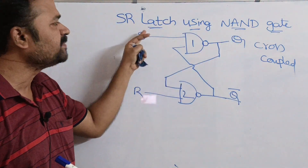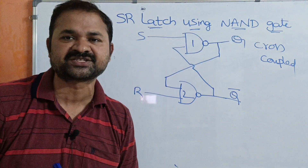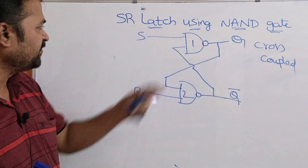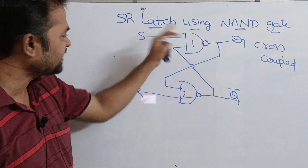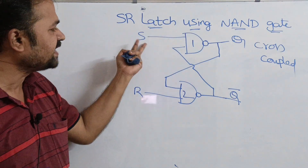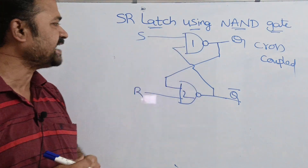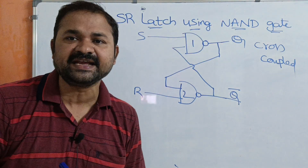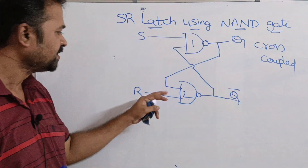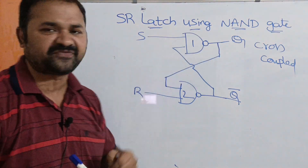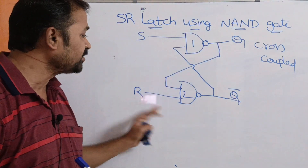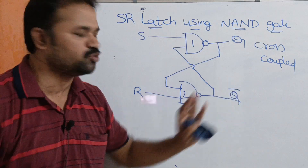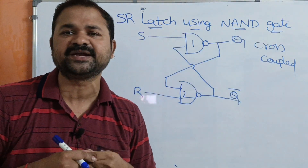So in order to implement SR latch using NAND gates, we require two NAND gates, where the first NAND gate accepts S as the input and the second input is the output of the second NAND gate. Likewise, the second NAND gate receives two inputs: first input is the output of the first NAND gate, and the second input is R. The outputs are Q and Q bar, which are complemented to each other.